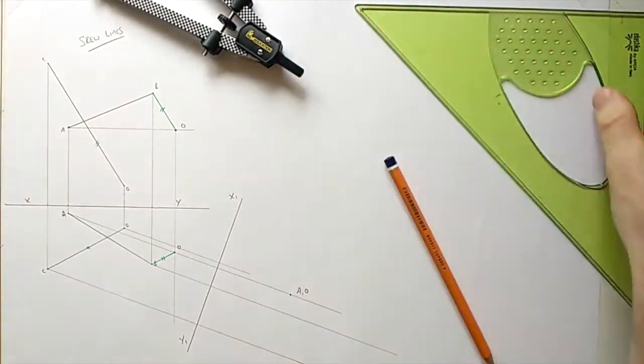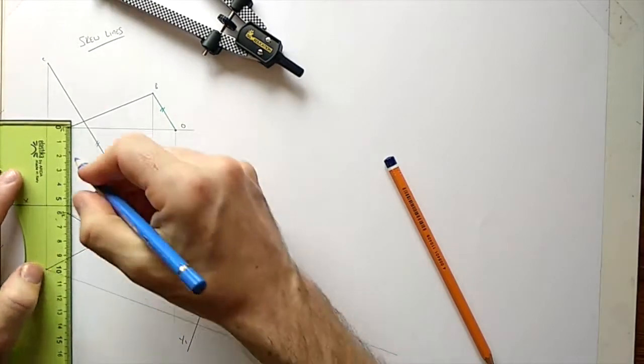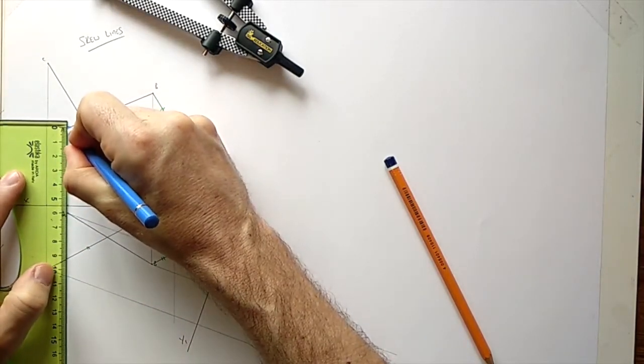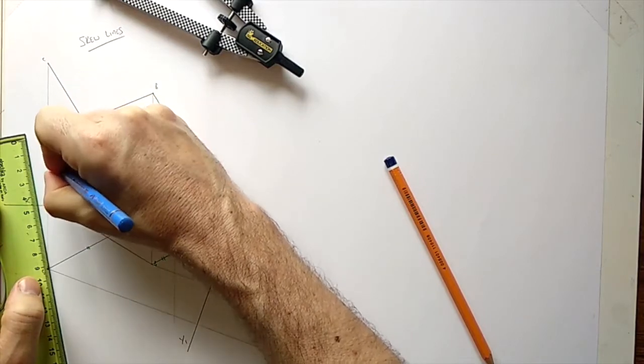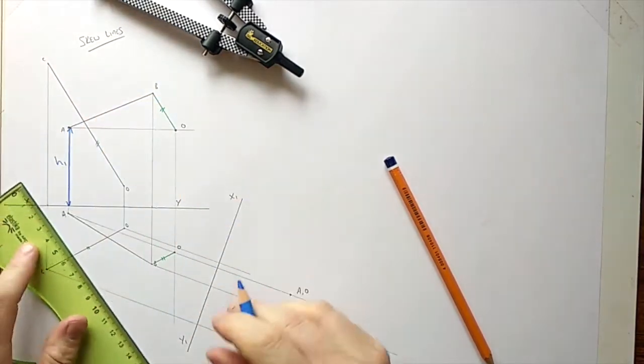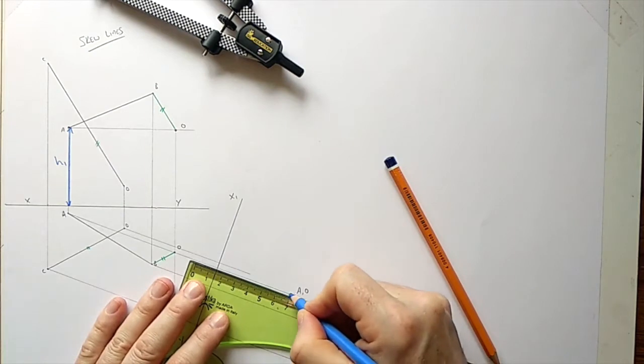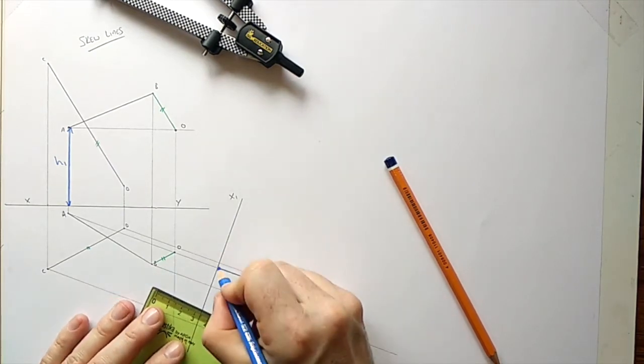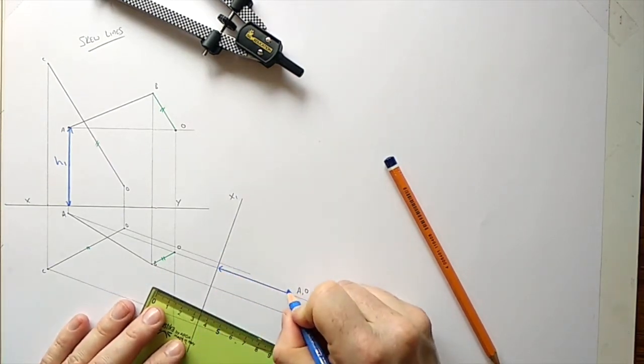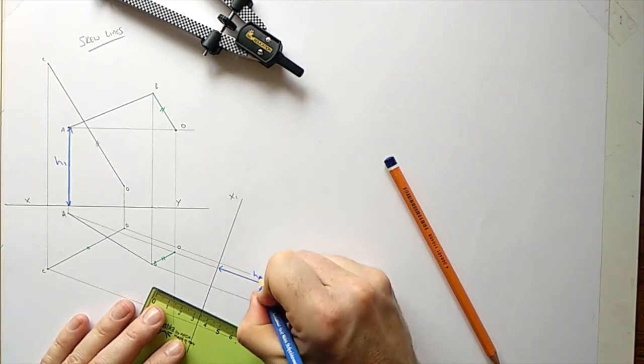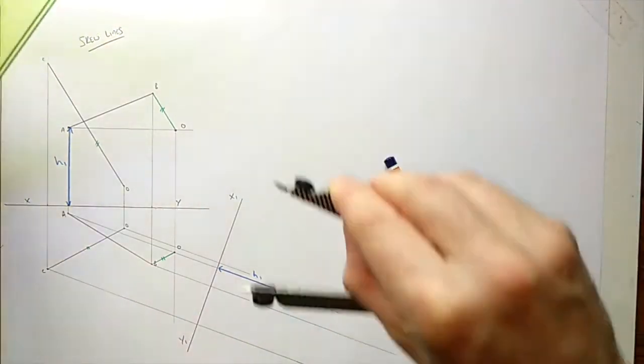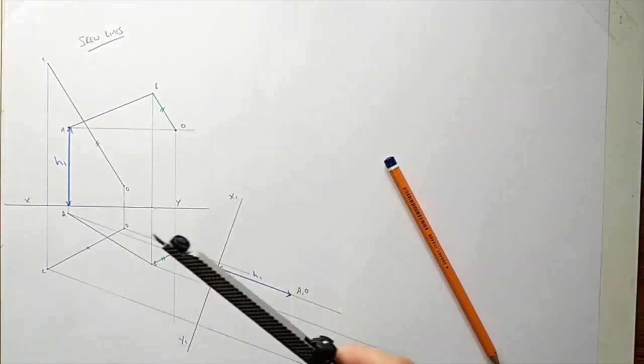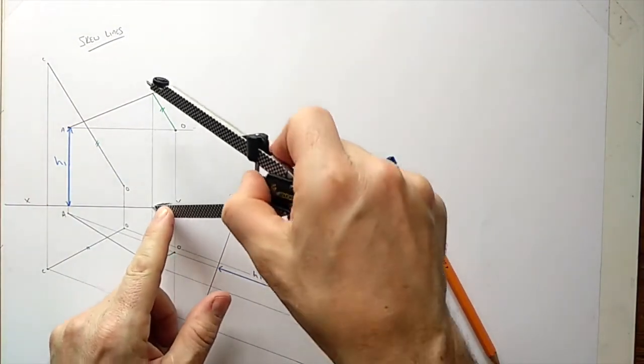Just in case you do get a bit confused over where some of these heights come from, we'll use a lovely blue first. So that's distance there called h1, that's where we got that from. This is great practice for your auxiliaries in general.